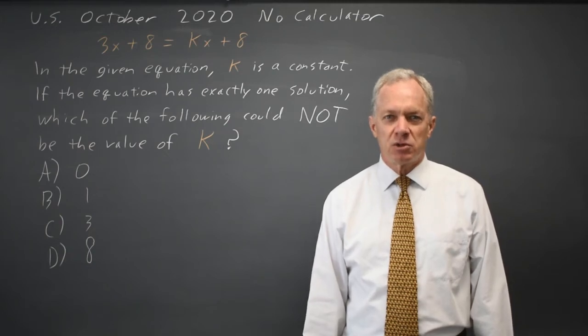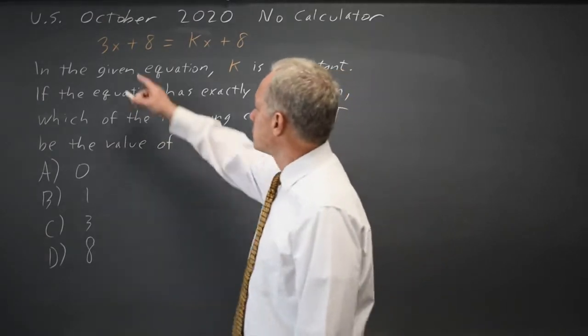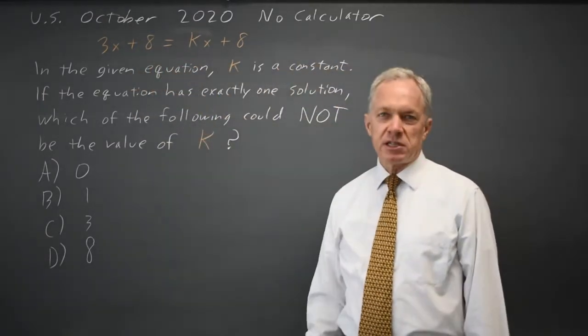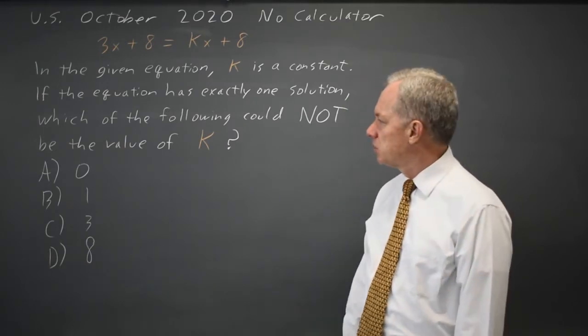This question is from the October 2020 U.S. exam, non-calculator. College Board gives us a linear equation, 3x plus 8 equals kx plus 8, and they ask for what value of k is there exactly one solution.